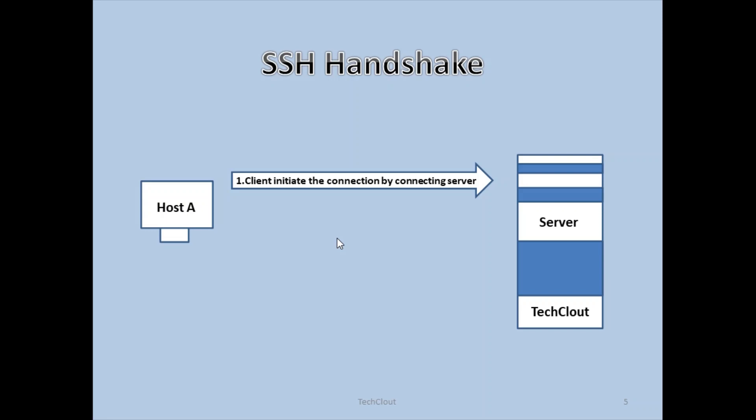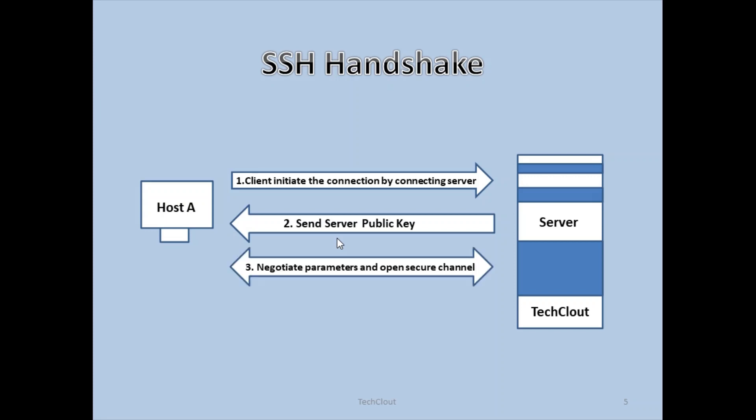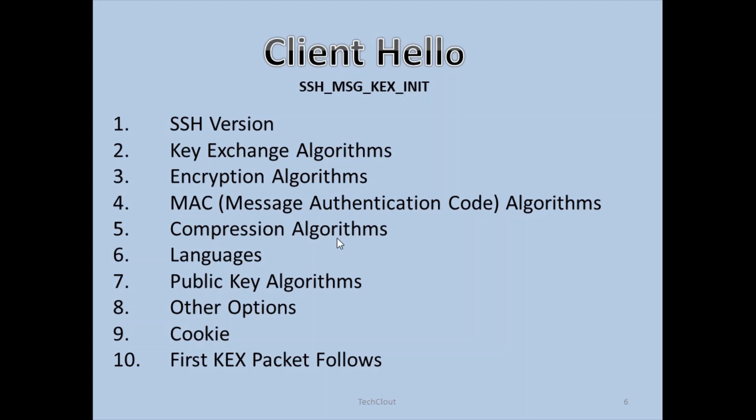Here we have Host A and another server. The client initially sends a connection request to the server. The server replies back to the client with the public key. Then they negotiate some parameters — those parameters include the encryption algorithm, hashing algorithm — and then they open a secure channel where the user gets logged into the SSH server or destination.